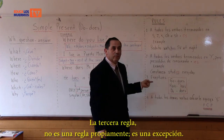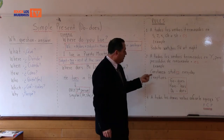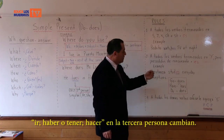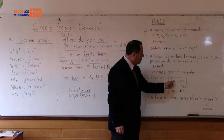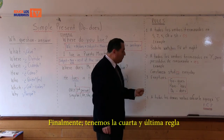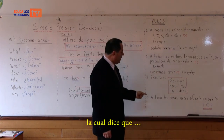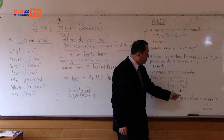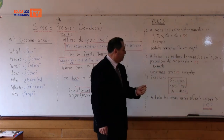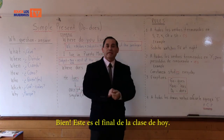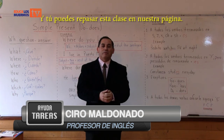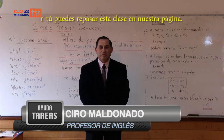The third rule is not properly a rule — it is the exceptions. These verbs: go, have, and do, change for the third person into goes, has, and does. Finally, we have the fourth and last rule, which says that a todos los demás verbos solo se le agrega la terminación S. Well, this is the end of our class today. We hope you enjoyed it, and you can review this class on our page. Thank you very much, and goodbye.